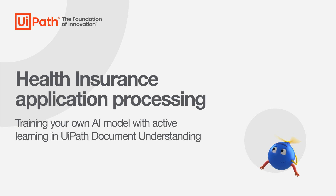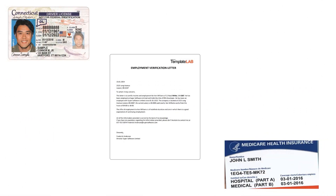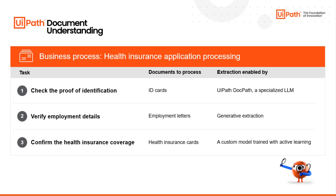Processing documents as part of health insurance applications is all about efficiency and accuracy in the health insurance industry. Usually you would need to extract, verify, and export data from a few documents like IDs, employment letters, and medical insurance cards. Using UiPath Document Understanding, you can enhance the accuracy and accelerate time to value.